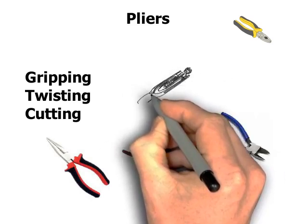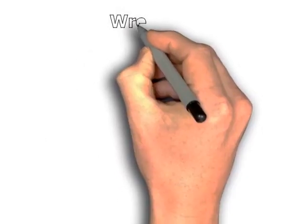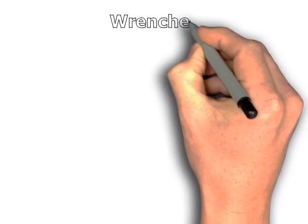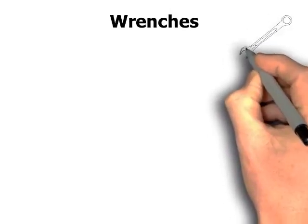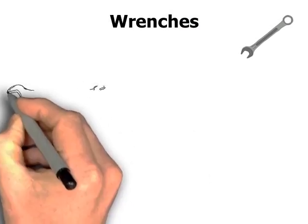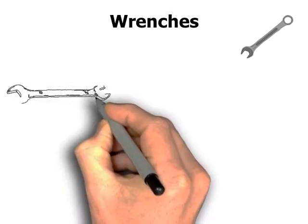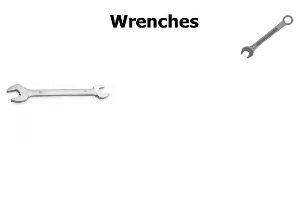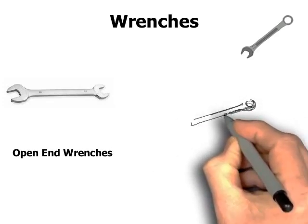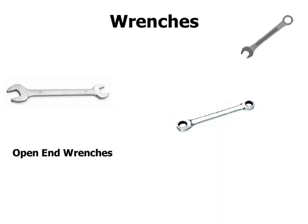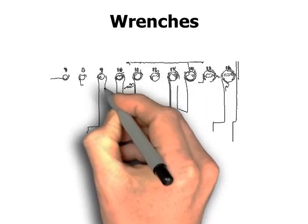Wrenches. These are designed for exerting torque on a nut or bolt. They are classified on the basis of head end size. On the basis of head, these are open end wrenches or box end wrenches, further categorized by size like one-by-three, three-by-four, and one-by-four. It is important for a technician to be familiar with different sizes.